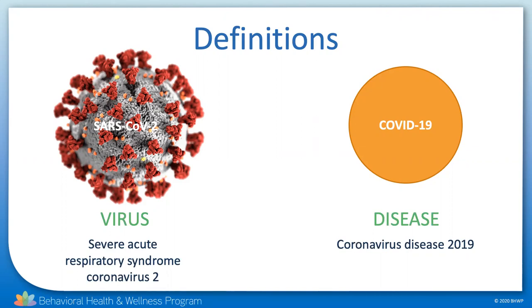Coronaviruses are most famously responsible for the SARS epidemic already mentioned, and the MERS outbreak of 2012 to 2013, and several more since then. Like SARS, MERS had an extremely high case fatality rate. According to the European Center for Disease Prevention and Control, from March 2012 to December 2019, there had been across all known outbreaks 2,494 cases of which 912 had died — an astounding case fatality rate of 36.6%.